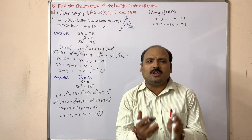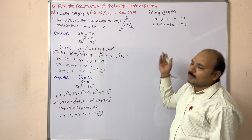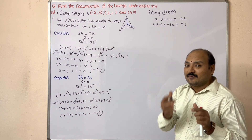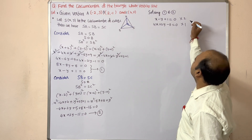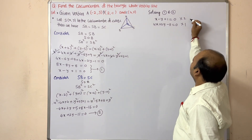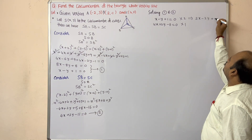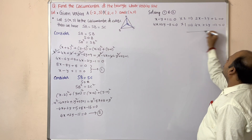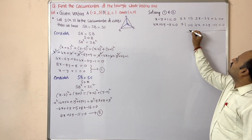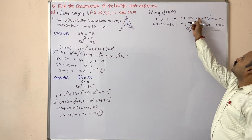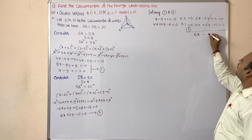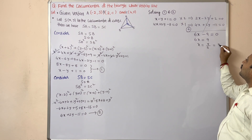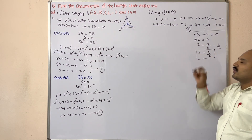Multiplying Equation 1 by 2 gives 2x − 2y + 2 = 0. Adding to Equation 2 (4x + 2y − 11 = 0): the +2y and −2y cancel. We get 6x − 9 = 0, so 6x = 9, therefore x = 9/6 = 3/2.